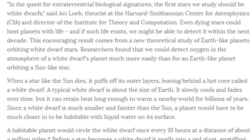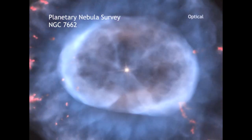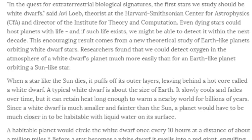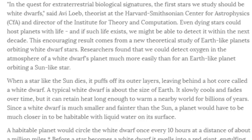A few intrepid astronomers have concluded that the most productive place to look for planets that can support life is around dim dying stars, white dwarfs, so prevalent in globular cluster M4 shown above. In the quest for extraterrestrial biological signatures, the first stars we study should be white dwarfs, said Avi Loeb, a theorist at Harvard-Smithsonian Center for Astrophysics and director for the Institute of Theory and Computation. Theory and computation go so well together. Even dying stars could host planets with life, and if such life exists, we might be able to detect it within the next decade. Oh really? This encouraging result comes from a new theoretical study of Earth-like planets orbiting white dwarf stars.